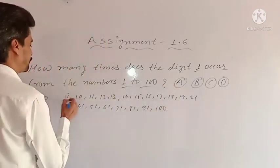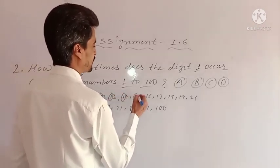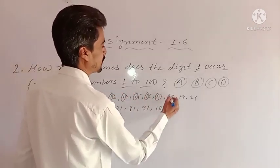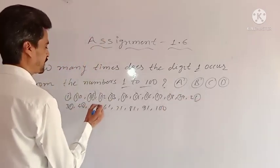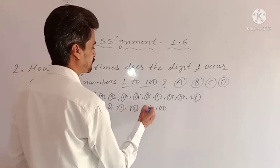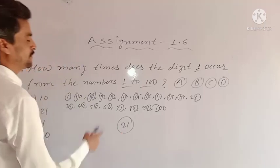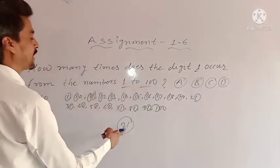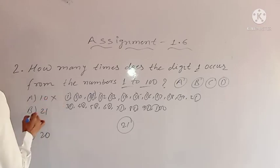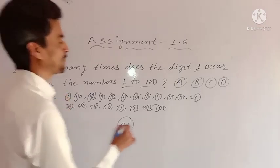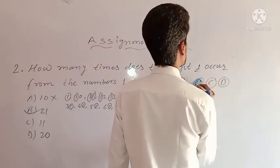So let's count down: 1, 2, 3, 4, 5, 6, 7, 8, 9, 10, 11, 12, 13, 14, 15, 16, 17, 18, 19, 20, and 21. How many times does 1 occur when we write from 1 to 100? It occurs 21 times. Option A is 10 — wrong. Option B is 21 — it is right. So I am coloring option B because it is our correct answer.